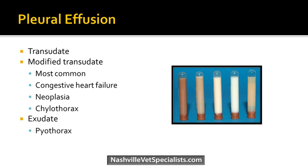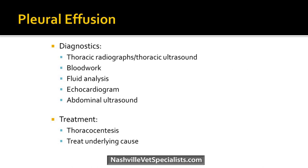To diagnose pleural effusion, chest x-rays and thoracic ultrasound are pretty diagnostic, or even just listening — in a very unstable pet you can try to tap and see if you get anything. Blood work helps determine why they have it. Fluid analysis and pathology submission can sometimes reveal cancer cells. Echocardiogram rules out heart failure, and abdominal ultrasound looks for cancer elsewhere. Treatment is to remove the fluid with thoracocentesis and treat the underlying cause.